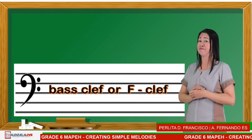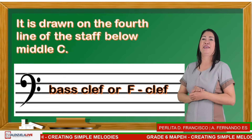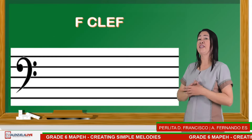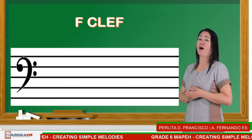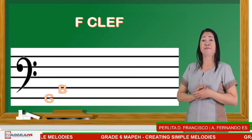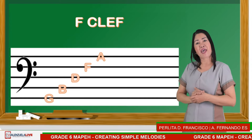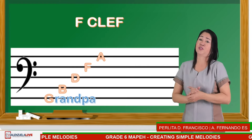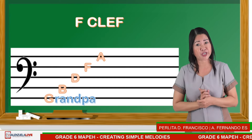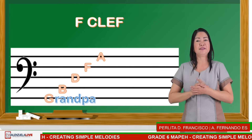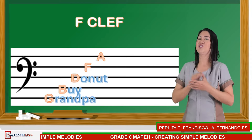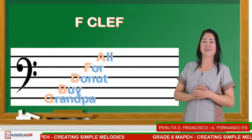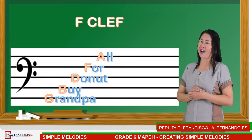Next is the F-clef or bass clef. It is shown on the fourth line of the staff, below the middle C. The letter names on the lines of the F-clef are: first line — G, second — B, third line — D, fourth line — F, and fifth line — A. We can use the phrase: Good Boy Does Fine Always.